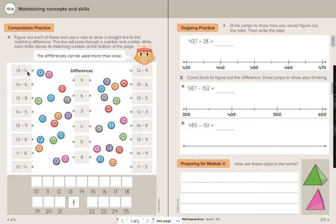It says to use a ruler to draw the line from here to the answer, from the equation to the answer, just so that you're sure it's super duper straight so you're passing through the right number and the right letter.